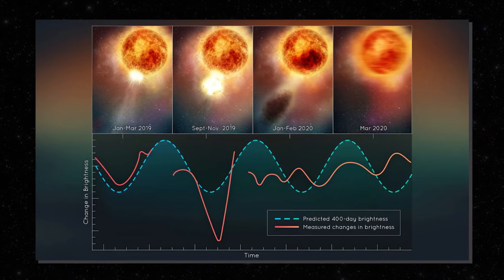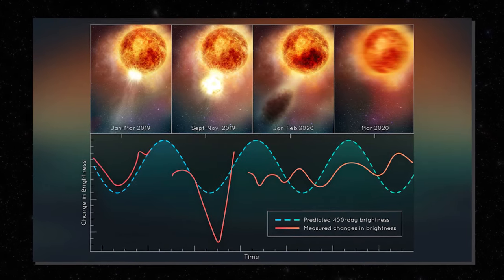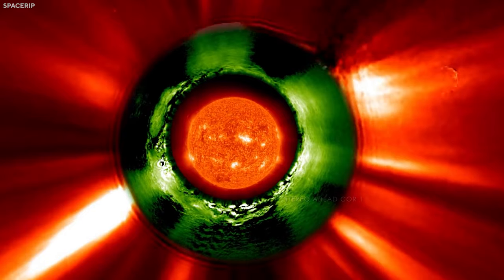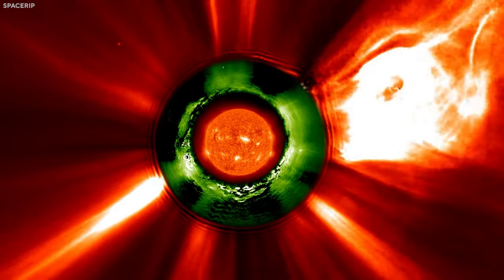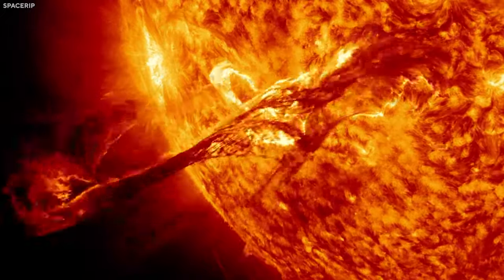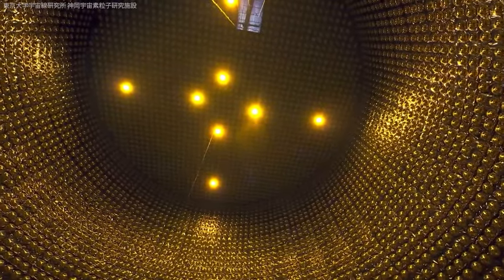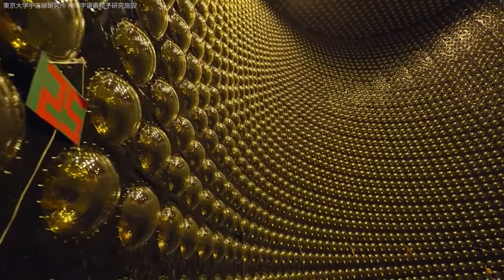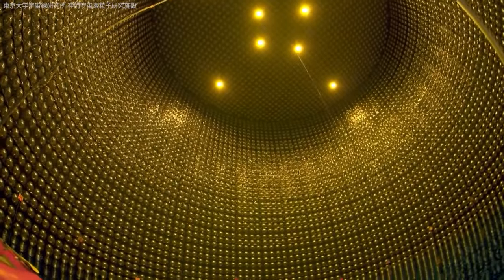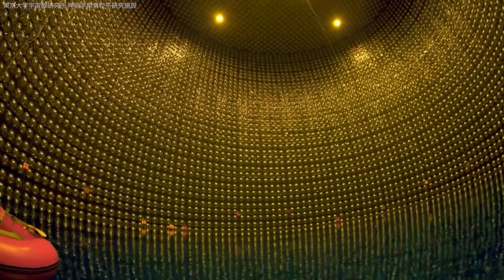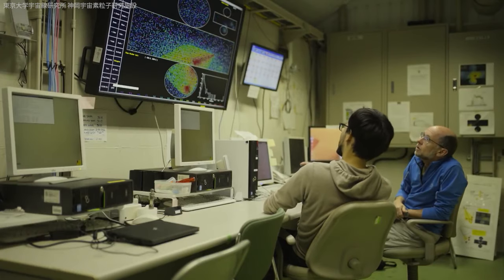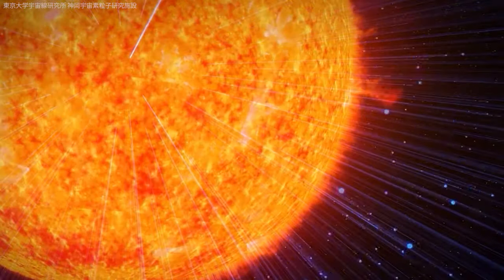Before the spectacular light display of the Betelgeuse supernova becomes visible to our telescopes, our planet would be showered with invisible neutrinos. Neutrinos are elusive particles with almost no mass that can easily pass through matter. When Betelgeuse eventually explodes, neutrinos are among the first messengers to reach us, serving as an early warning system. Specialized neutrino observatories, located deep underground or submerged in water, are ready to detect these sudden surges. This early warning would give researchers valuable preparation time before the full luminosity of the supernova becomes visible.